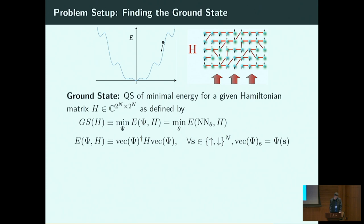It turns out there is. Based on our previous results, we showed that specific architectures of deep convolutional networks can much more efficiently — polynomially more efficiently — represent highly entangled wave functions compared to previous methods. The goal is finding the ground state: given a system of particles and a model of how they interact described by a Hamiltonian matrix H, find the state of minimal energy by minimizing the bilinear form between the wave function and H.